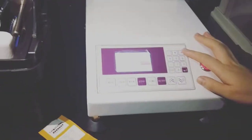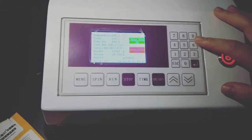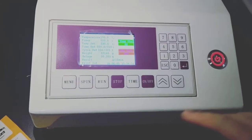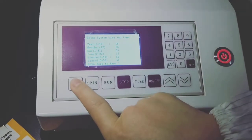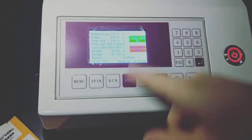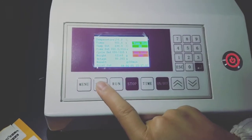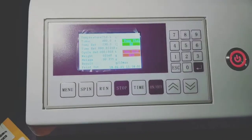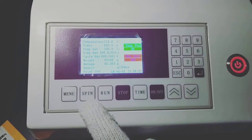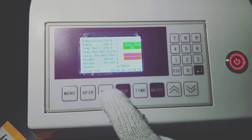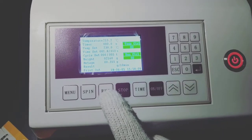There are ten number keys used for inputting the temperature or other values as needed. This is the main manual key. We can set the parameters. This one is used for manually cutting. This spine key is the manually cutting key. And this run key is used for automatic cutting control.